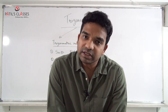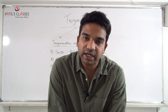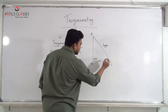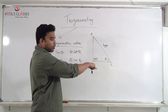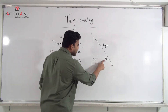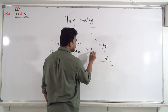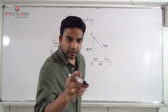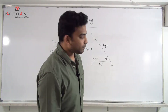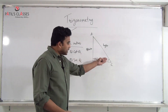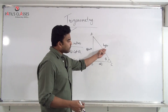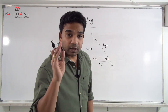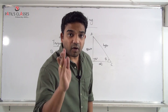Introducing theta: the side opposite to theta is called the opposite side, and the side adjacent to theta is called the adjacent side. Hypotenuse is the side opposite to the 90° angle. This video is being recorded for every student from basic level, so that even those who know nothing will be able to understand.